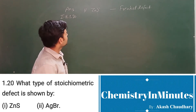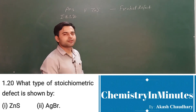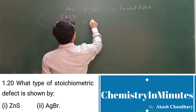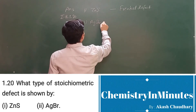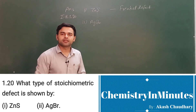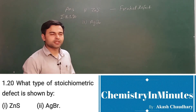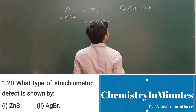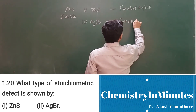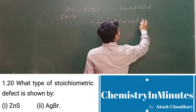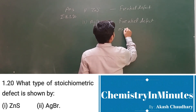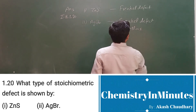The second solid is AgBr. AgBr is an important example because this solid shows both the Frenkel defect as well as the Schottky defect. You will remember that AgBr exhibits both Frenkel defect and Schottky defect.